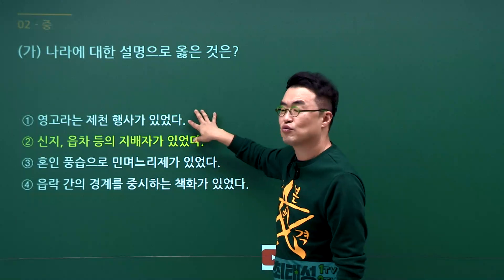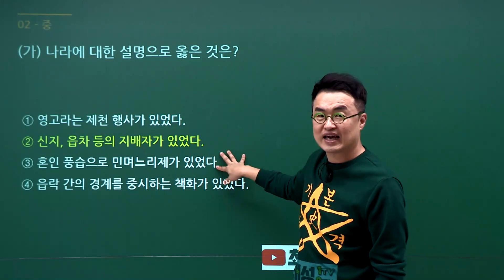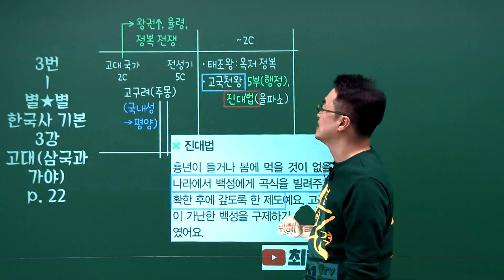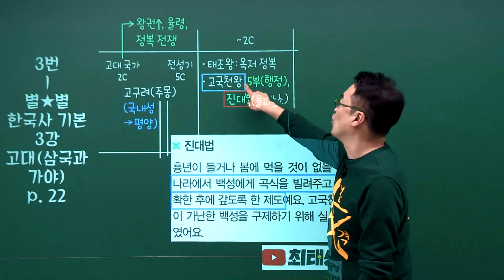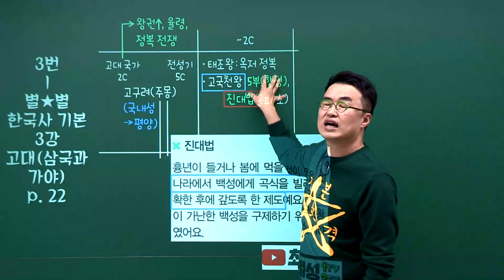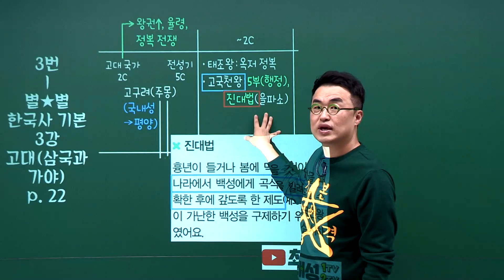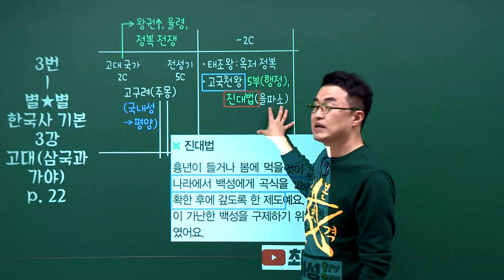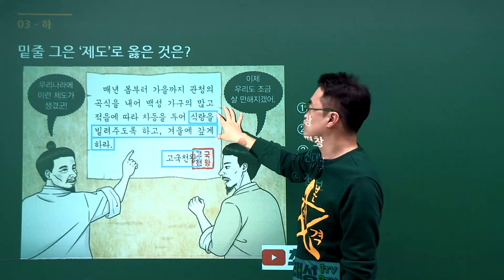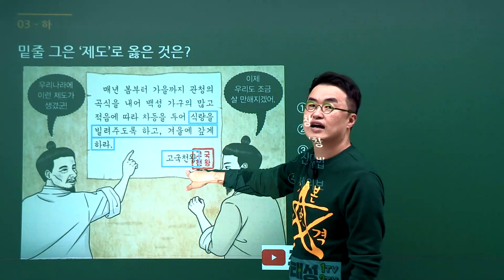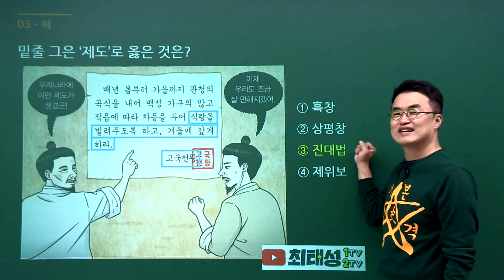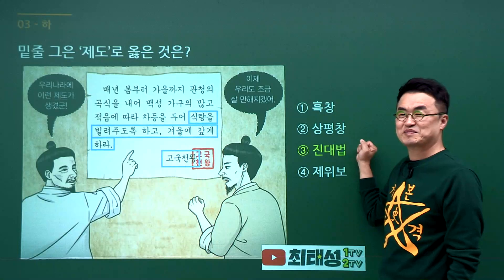영고는 부여, 민며느리제는 옥저, 책화는 동예입니다. 고구려 고국천왕이 진대법을 실시했다는 내용을 배웠습니다. 문제에서 식량을 빌려주도록 하고 겨울에 갚게 했다는 고국천왕이 나왔으니 진대법이 정답입니다. 3번 고르시면 되겠습니다.